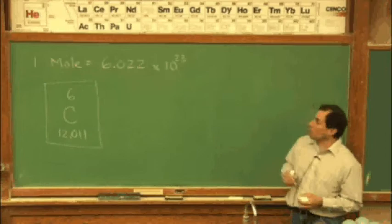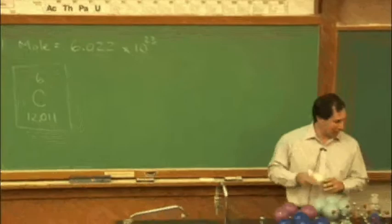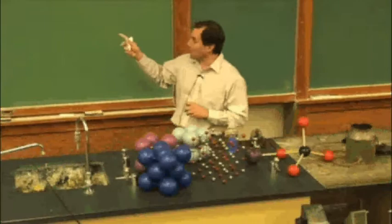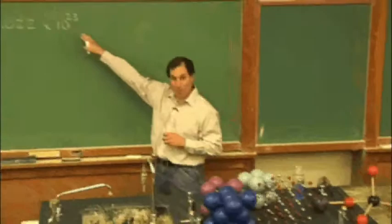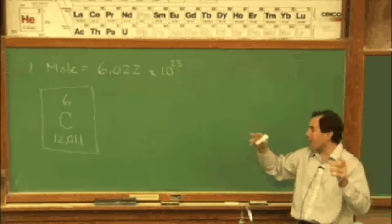The problem about talking about macro scale items, macro scale meaning the world that we live in like balls or how many different bottles are on the table, is that this is an extremely large number. I once read that if you had this many soda cans, 12 ounce soda cans, it would cover the earth's surface and then stack 100 miles high. So this is just a huge number which is some kind of testament as to how small atoms actually are.